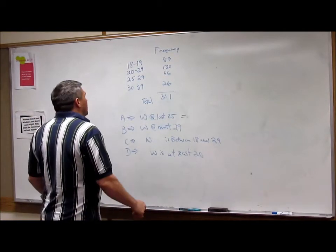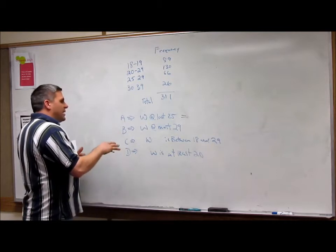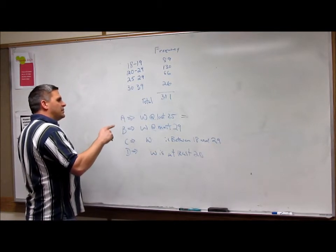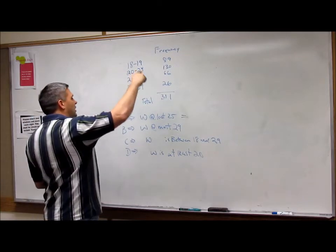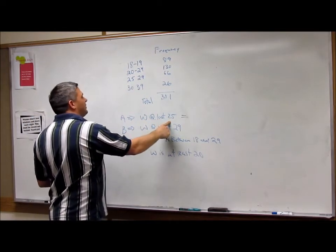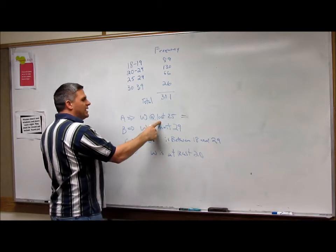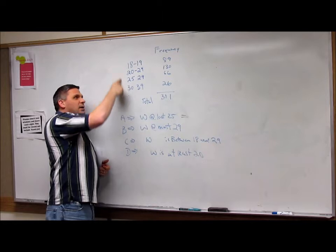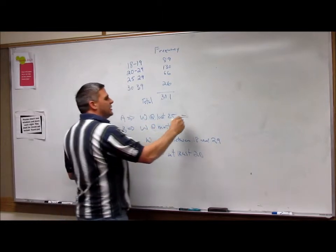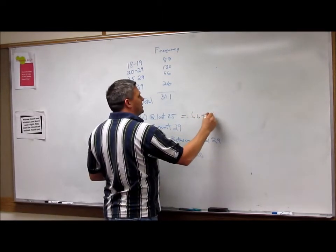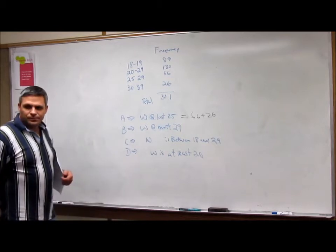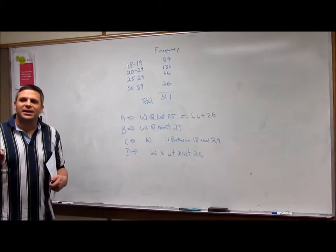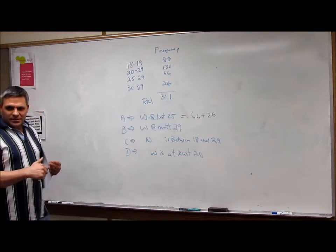18 to 24. So to be A, to be at least 25, then that means at least 25 means I'm going from 25 up. So I'm talking about 66 plus 26, because I'm at least 25.